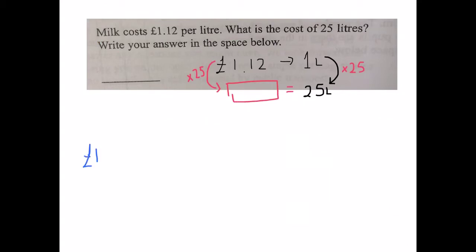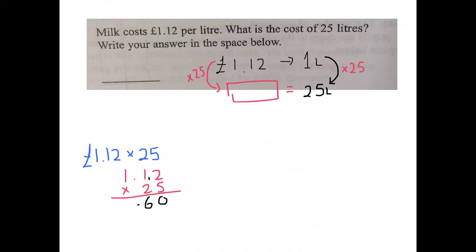So our sum is £1.12 times 25 — quite a tricky multiplication sum. Let's do it as a vertical sum. Multiplying by five first: five times two is ten, one over; five ones are five plus one is six; keep decimal points in line; five ones at the end are five. Then put in a zero for the tens: two times two is four, decimal point in, two times one is two, two times one is two. Adding the numbers: zero and zero are zero; six and four are ten, one over; five, two and one is eight; two and zero is two. So £28 is the cost for 25 litres.